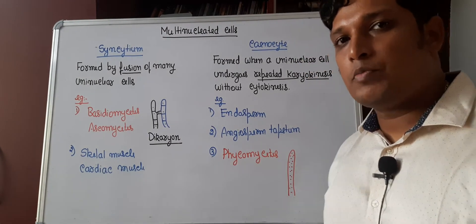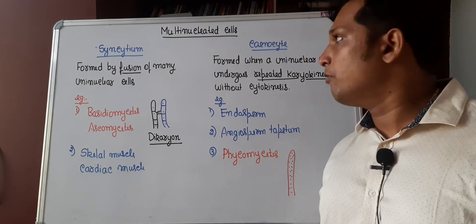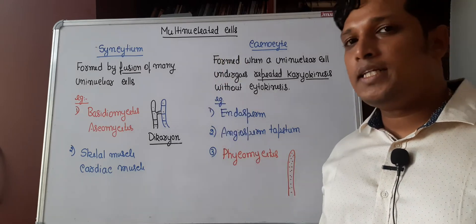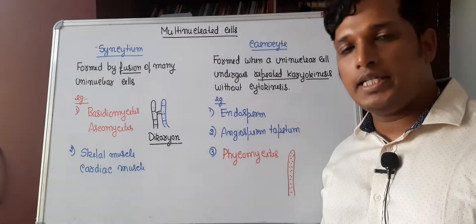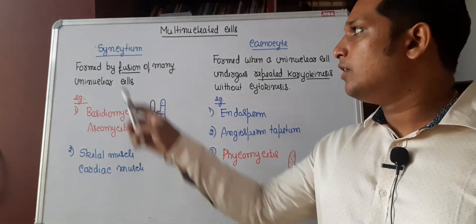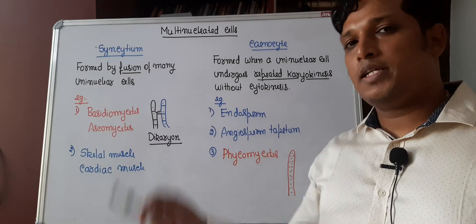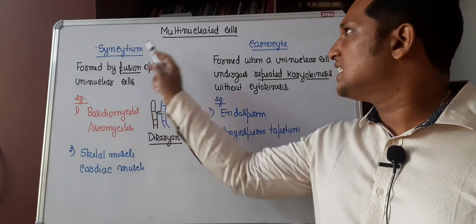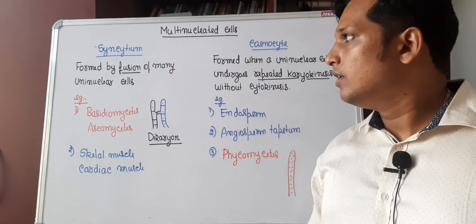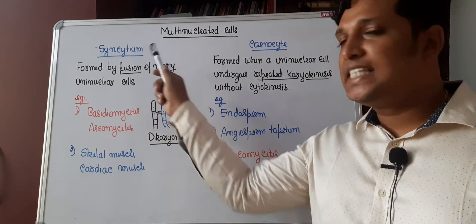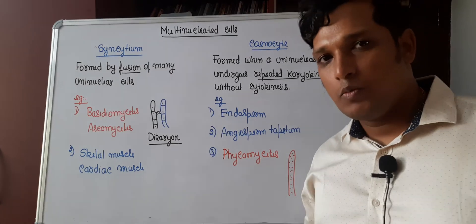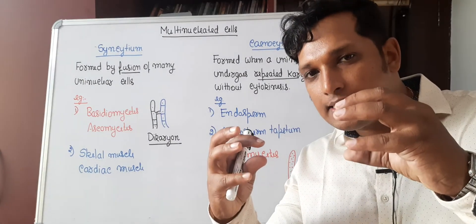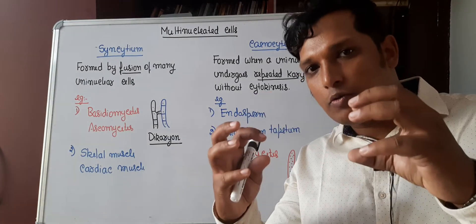Welcome to my channel. Today we are going to learn about the types of multi-nucleated cells. There are two types of multi-nucleated cells: syncytium and synocyte.